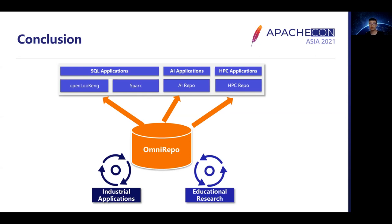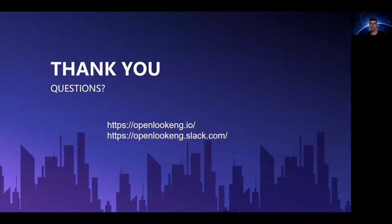Omni Runtime is a framework for data-driven specialization, which can be used in developing the next generation of big data processing. Our goal is to build an Omni repository containing operators for different scenarios and supporting different engines. There is a lot of work to do, so welcome to help us implement more operators and enrich the Omni Runtime ecosystem. You can learn more about the progress of Omni Runtime from the open community. That's all about my topic. Thank you.